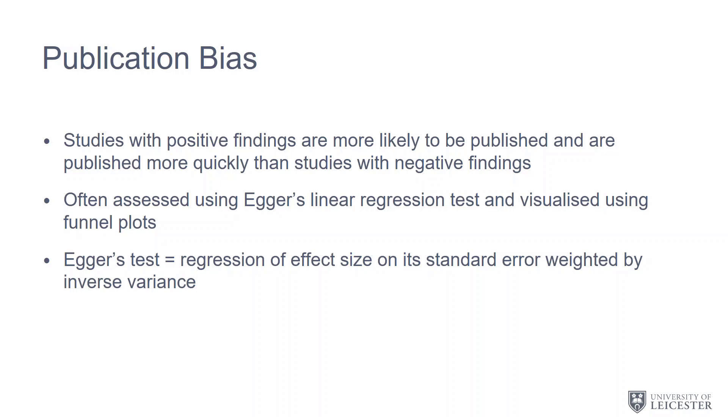The problem here arises that studies with negative findings being less likely to be published means that they're harder for us to identify and to include within systematic reviews and meta-analyses. This can lead to studies being systematically missing from our meta-analysis and can result in overestimating or underestimating the effects of an intervention. Obviously that's not ideal, particularly when our meta-analyses feed into the clinical decision making process.